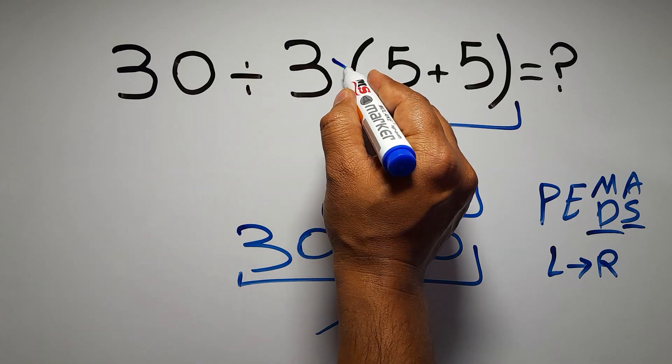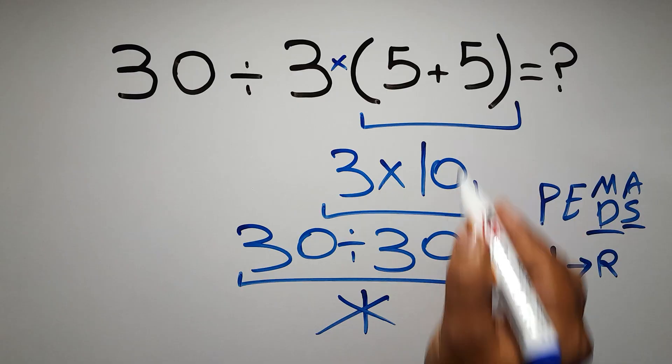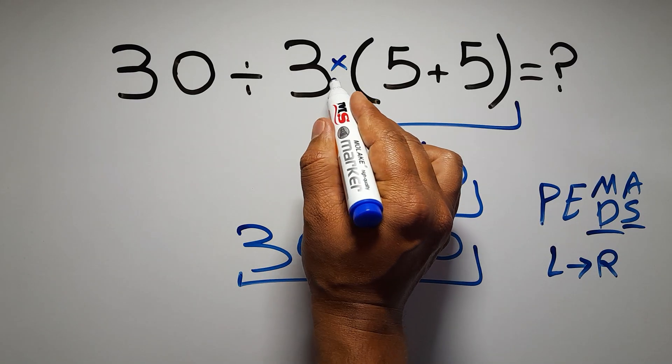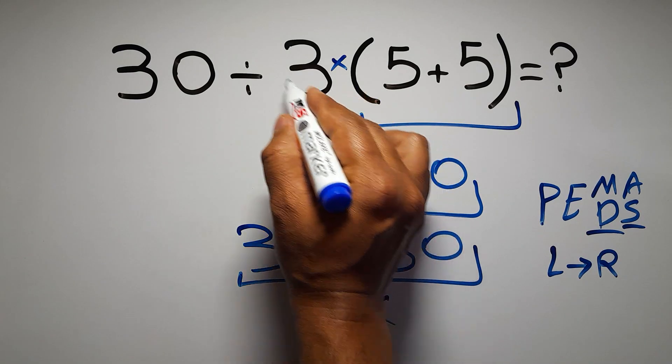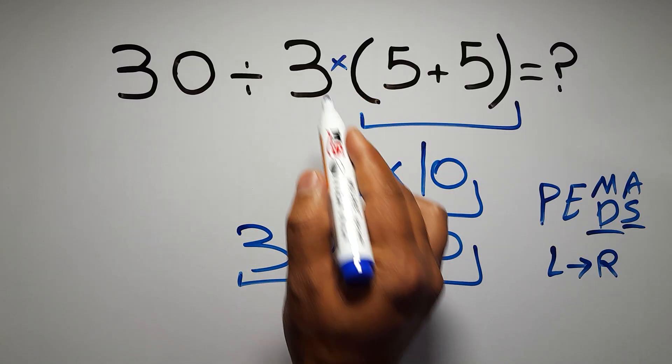In this expression we have one division, one multiplication, and one parentheses. Inside this parentheses we have one addition. Here we have a multiplication because in mathematics when a number is placed next to parentheses it means multiplication, and we usually don't write the multiplication sign for brevity.